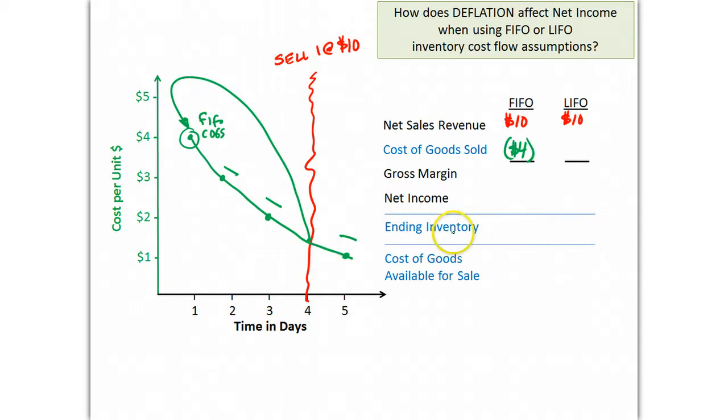So if we write those down, these ones that are not sold yet must still be in ending inventory. So that would be one at $3, one at $2, and one at $1, which equals a total of $6 still in ending inventory.